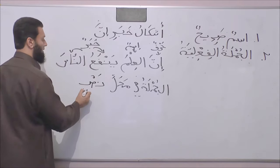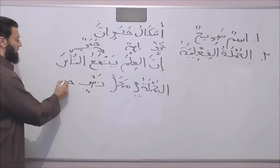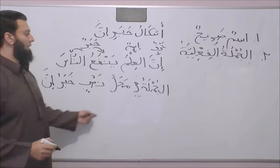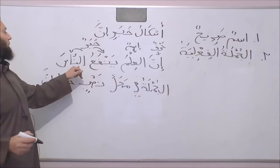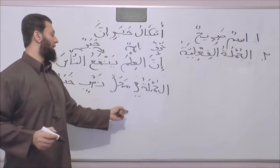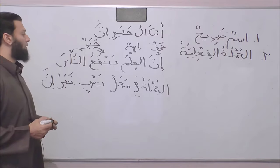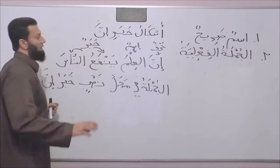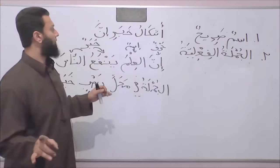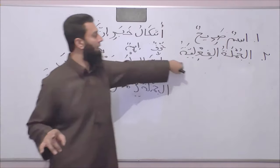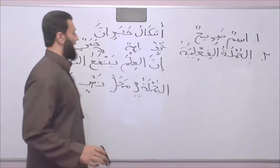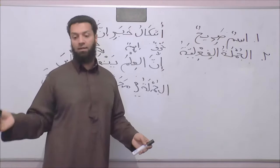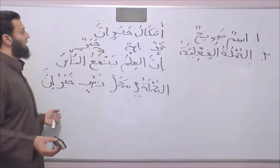The جملة ينفع الناس — we say الجملة في محل نصب خبر إنّ. We mentioned that example to illustrate that the خبر إنّ can be الجملة الفعلية. This is not particularly complicated — many of these principles we have already discussed at some point in our previous lessons.